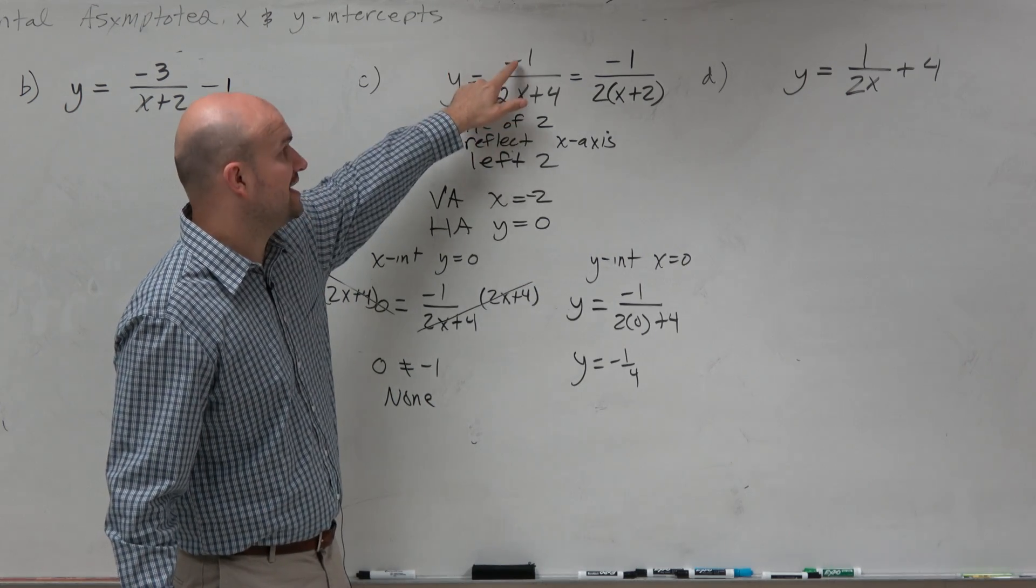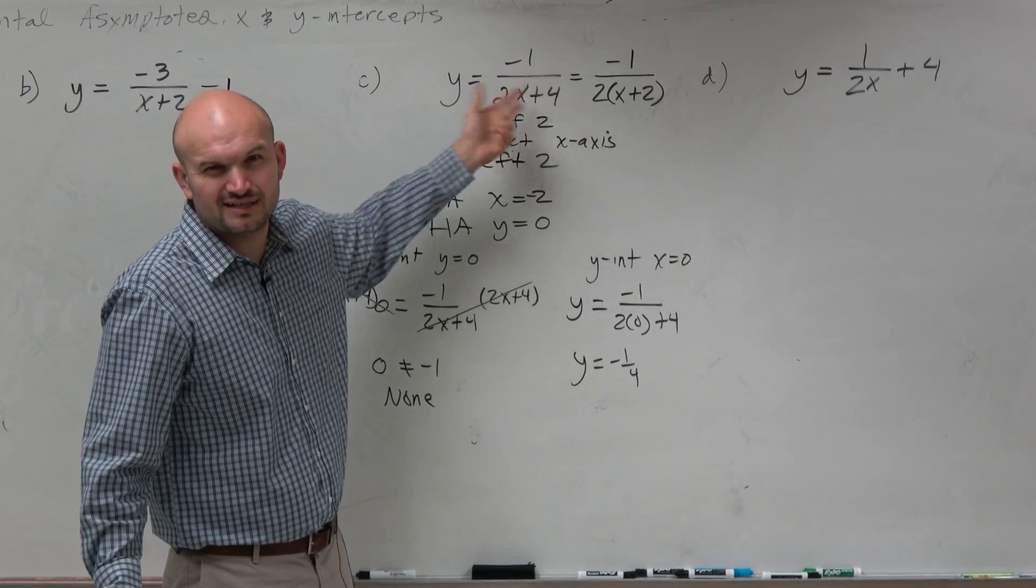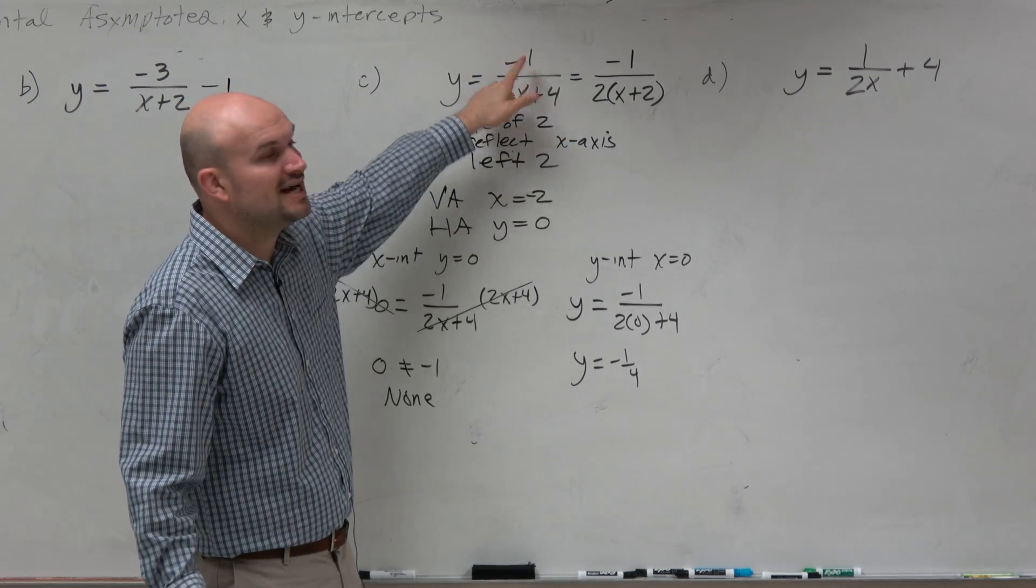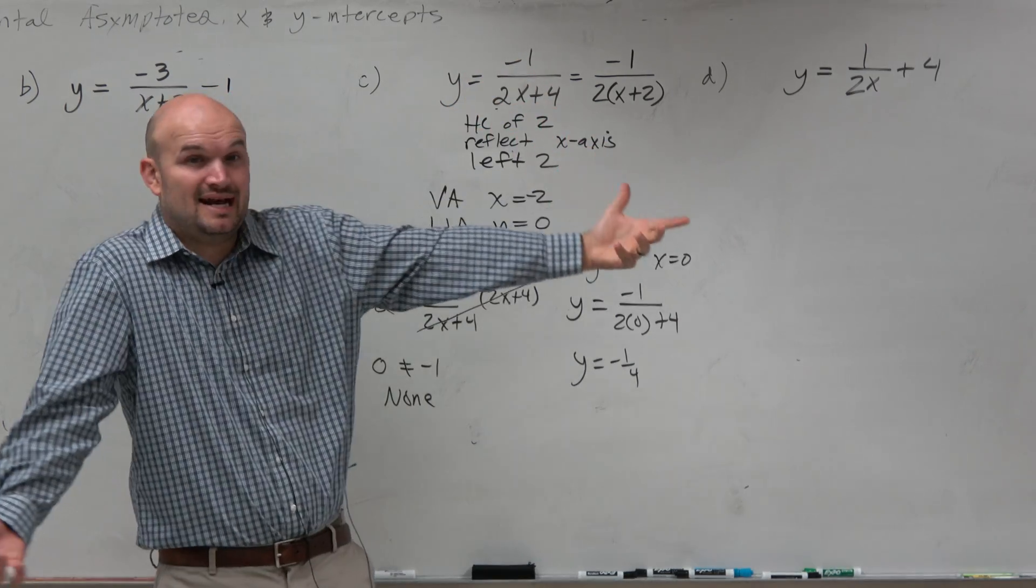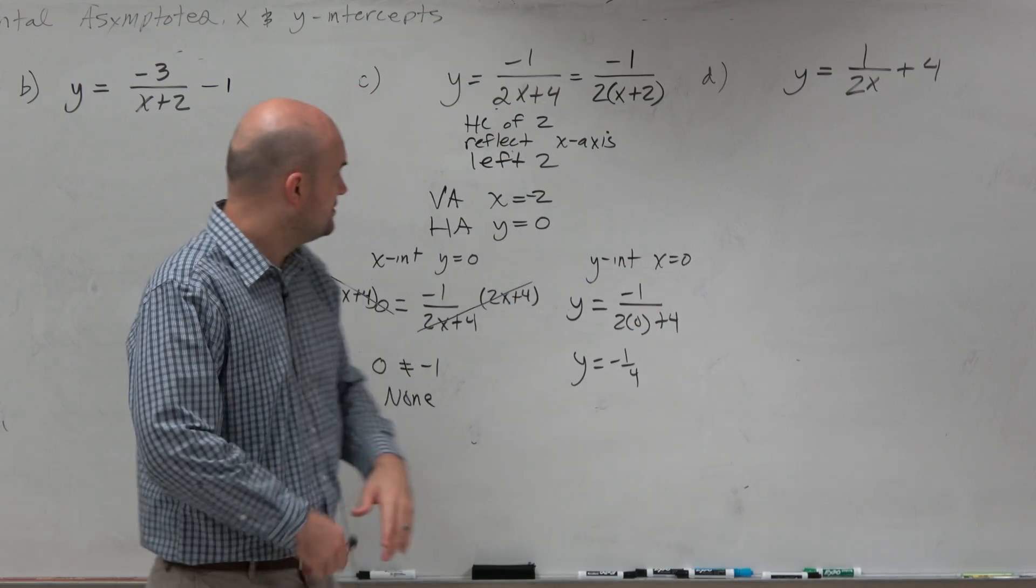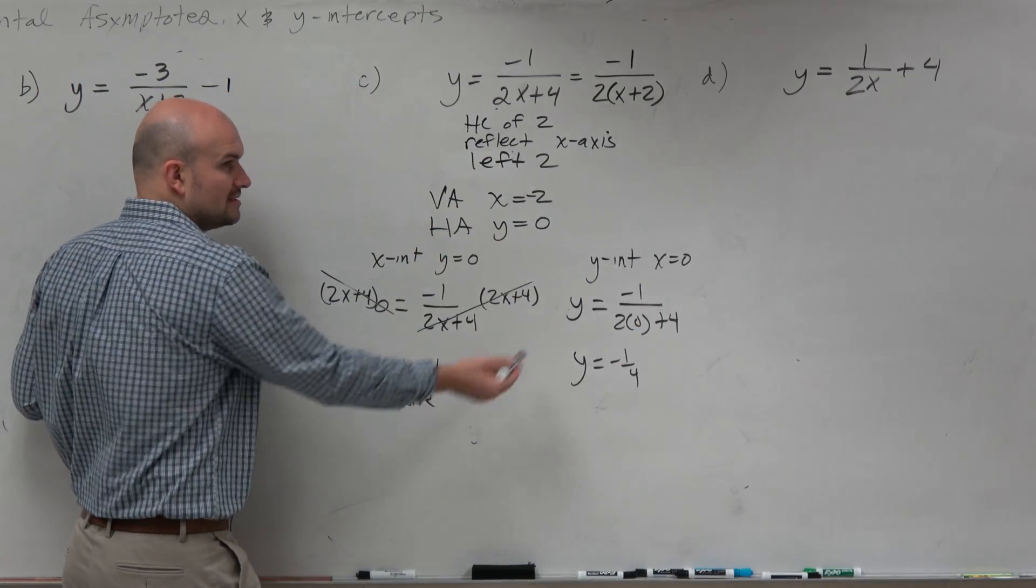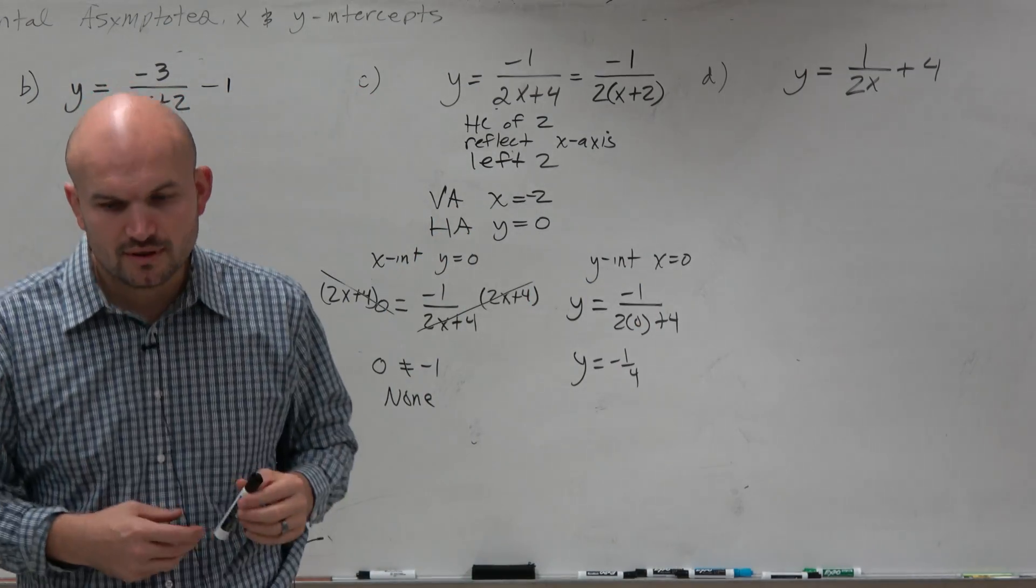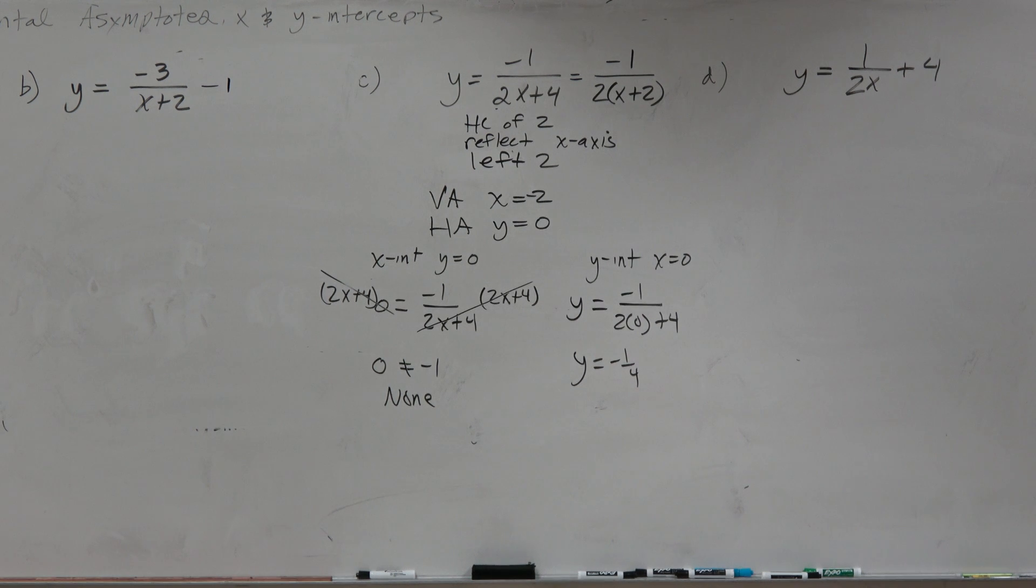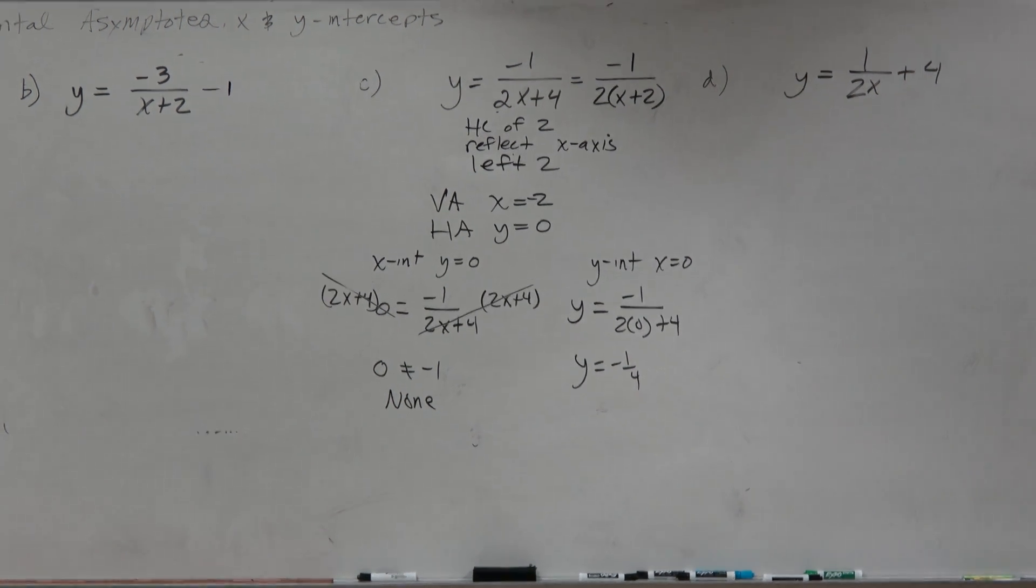So it's really always just going to be the constant over the constant. You don't really need to think too much about this. It's just constant over constant, because anything with an x just goes to 0, right? So now we've identified the asymptotes and the intercepts. All right? So what I'm going to do for each and every one of these problems is check.